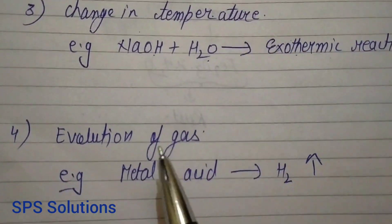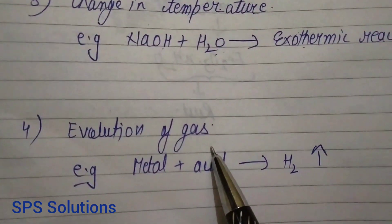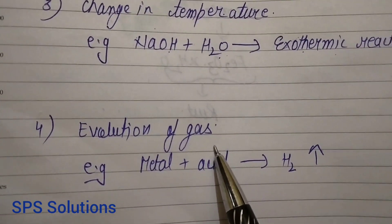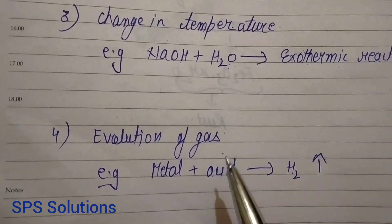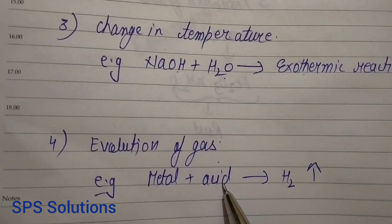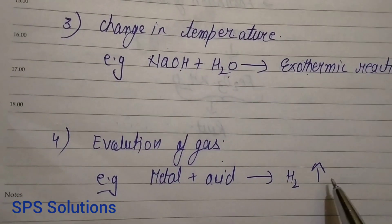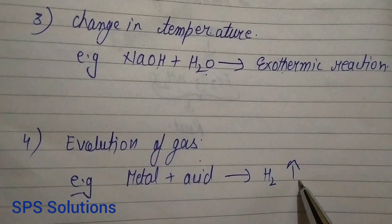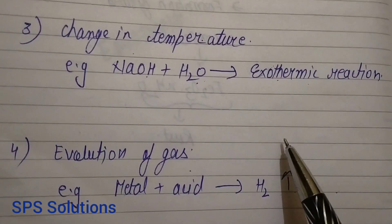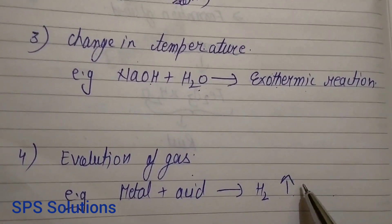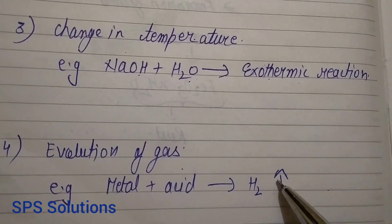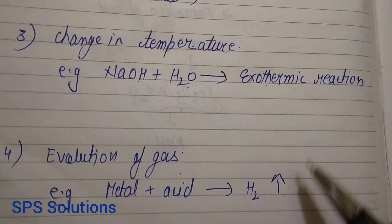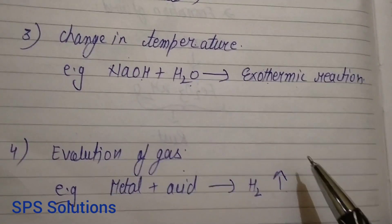The fourth nature is evolution of gas: whenever a reaction takes place, a gas may be evolved after the completion of the reaction. For example, if you add a metal to an acid, hydrogen gas will be released. The upward arrow sign is used for gases, meaning whenever a gas is formed on the product side, it is released out as soon as it is formed. So that arrow sign indicates that the product is formed as a gas and is taken out from the reactant mixture as soon as it forms.